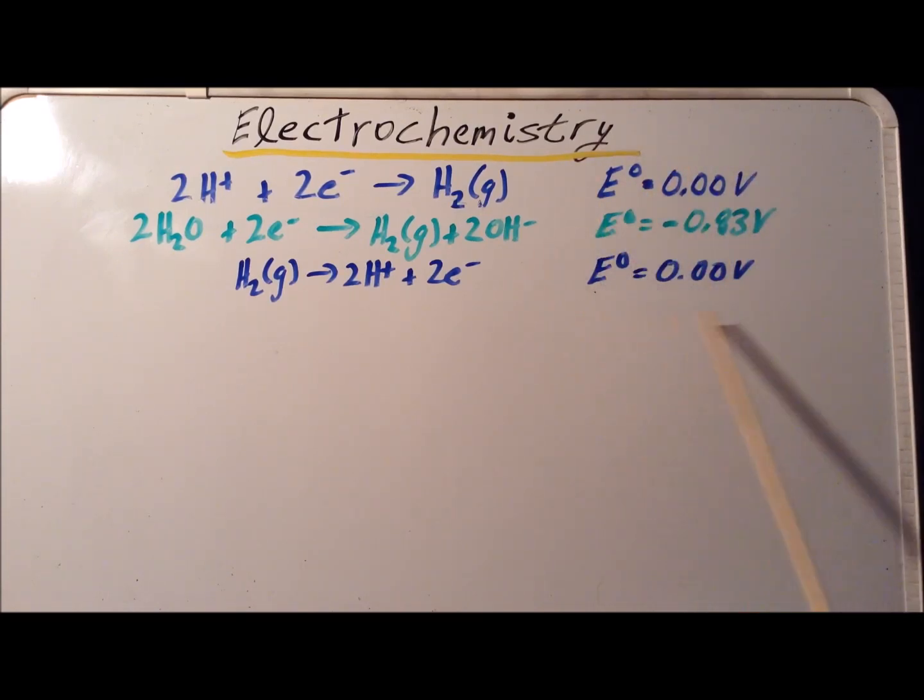And just in this case, since it's zero, if we take the negative of zero, we get zero as well. So this gives us that H2 gas turning into two H+ and two electrons has a potential of zero volts.